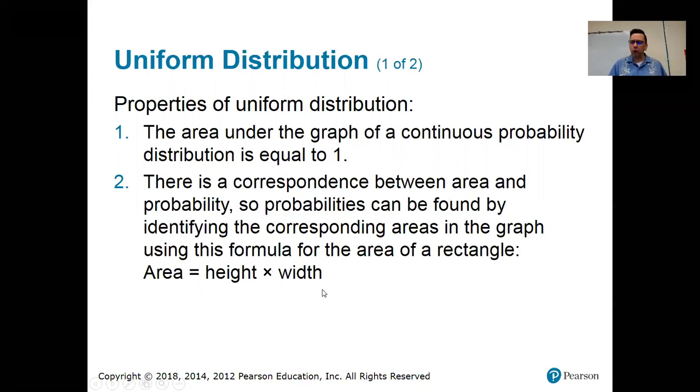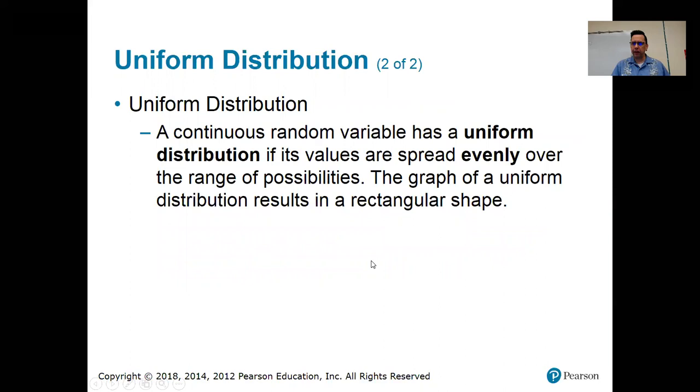So for the uniform distribution, that graph, you're going to see it here in a second, what makes it uniform is that its values are spread evenly over the range of possibilities. So let me do something that I try not to do all that often. We've talked before about what a normal distribution looks like. It has this sort of bell shape and it's symmetric. A uniform distribution is just completely flat across the top.